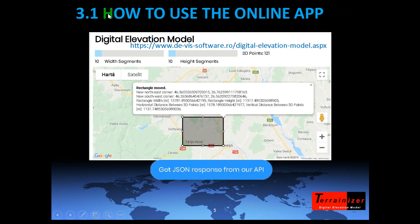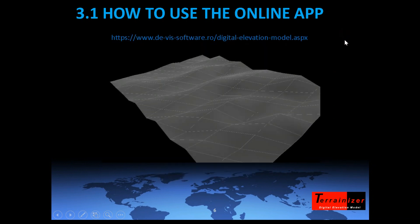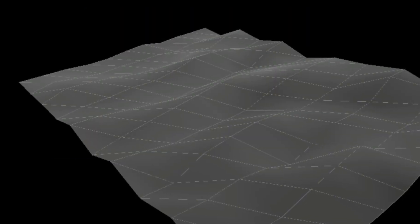How to use the online app. Choose an area on earth by moving and resizing the rectangle. Choose the number of segments on width and on height in which the rectangle will be divided. The number of 3D points and other dimensions that you see on the screen are automatically calculated. Click on the blue button to get the JSON response from our API. See the result both in JSON format and on screen as a 3D mesh.